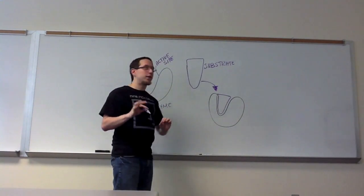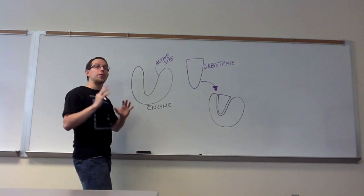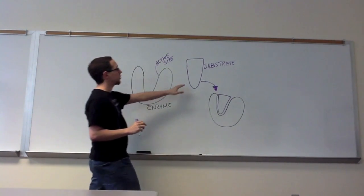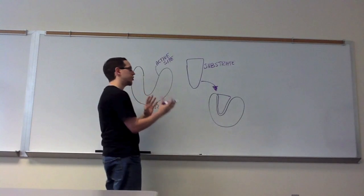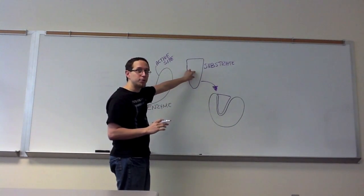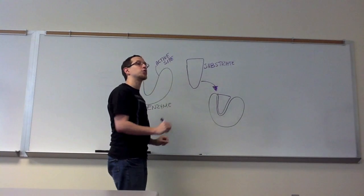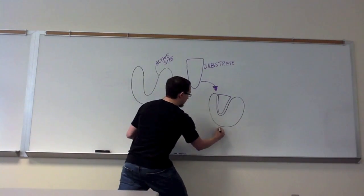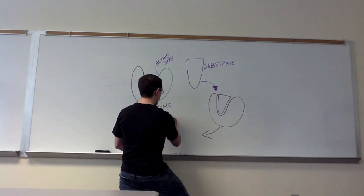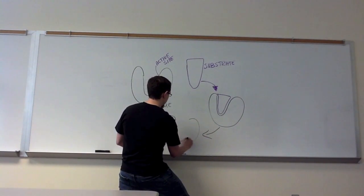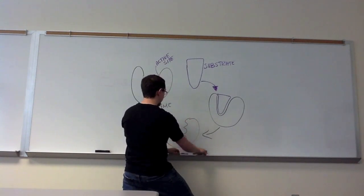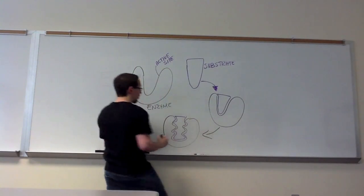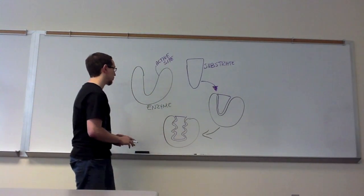And the other thing you need to realize is that the active site is actually very flexible. So what that means is that as it binds to the substrate, it still has the potential to change shape, thereby destabilizing the substrate and forcing the reaction towards the product side. So this active site is going to change shape as this binding occurs. And in doing so, it's going to cause the bonds that exist within the substrate to destabilize, and that's going to further force the substrate towards the direction of the products.